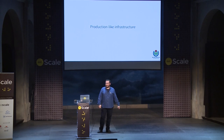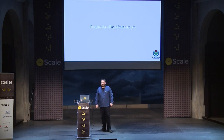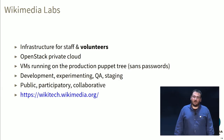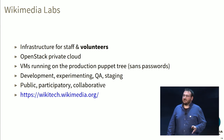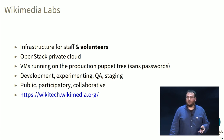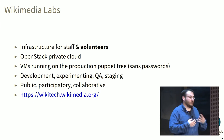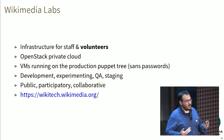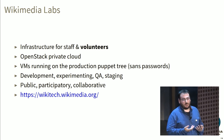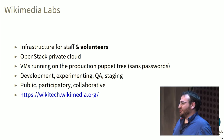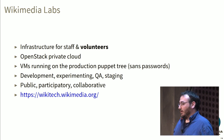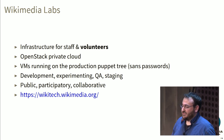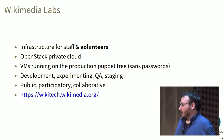Finally, a few words about our production-like infrastructure. We have a project called Wikimedia Labs — an infrastructure for staff and volunteers as equals, developers and admins. It's basically an OpenStack private cloud: VMs running on the production Puppet tree, with production manifests but with some abstractions to remove passwords. We use it to develop, experiment, run QA, and stage changes before they go to production. It's part of our general strategy of being more participatory and open to contributions. We also have an open code review system, an open bug tracker, and communication channels such as mailing lists and IRC. Anyone can contribute.